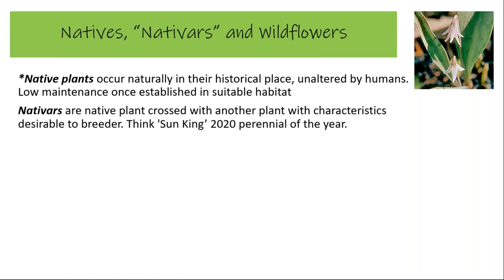Nativars are created when a breeder takes a native plant and crosses it with another to create desirable characteristics — things like Sun King, the 2020 perennial of the year. I was part of a neighborhood garden club years ago where we were solely responsible for propagating a hideous number of invasive plants throughout the neighborhood. And just a little playful jab: I'm a master naturalist, and we say you master gardeners put in the perennial of the year so that us master naturalists can come and dig them out and do control measures five or ten years later.